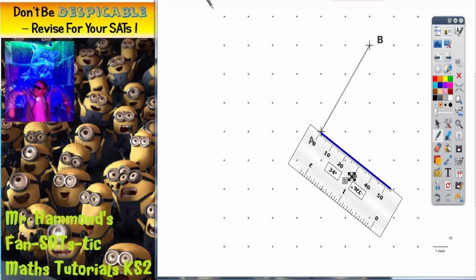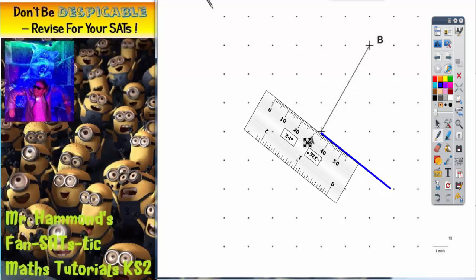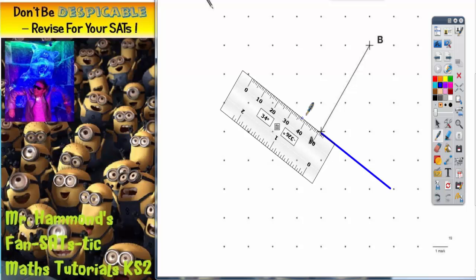Now of course there is one other answer you could have done for this. You could have actually done the right angle, the line going in the opposite direction up here. Let's first of all just mark that off so that we know that that's a right angle.